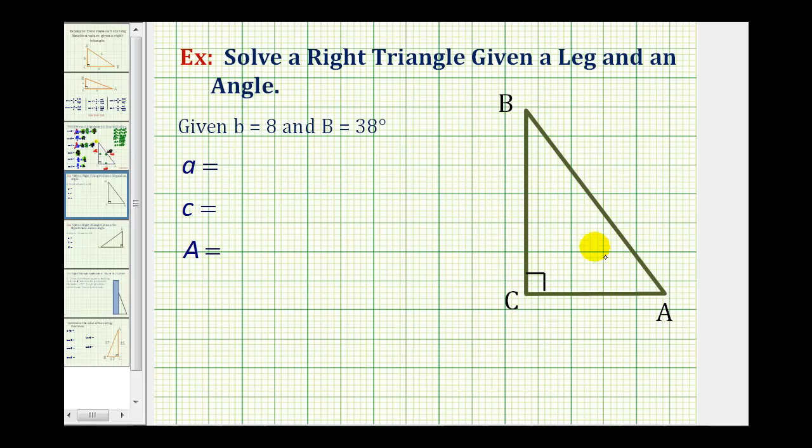We want to solve the right triangle, given the length of side B is eight units, and the measure of angle B is 38 degrees. So if angle B is 38 degrees, side B is opposite this angle, so this would be side B. We know this length is eight units. So if this is angle A, then this would be side A. If this is angle C, this would be side C.